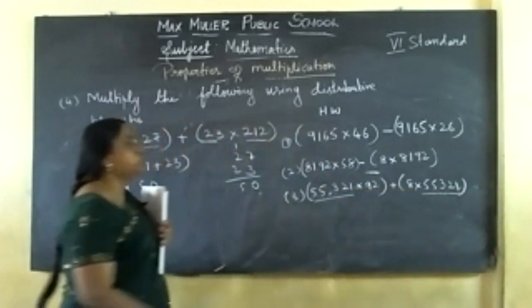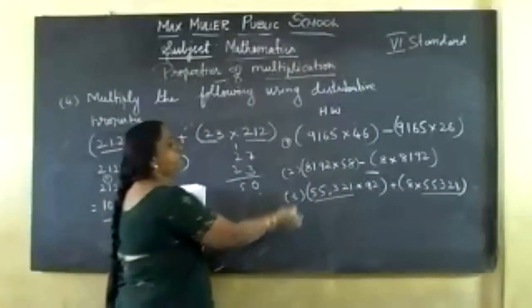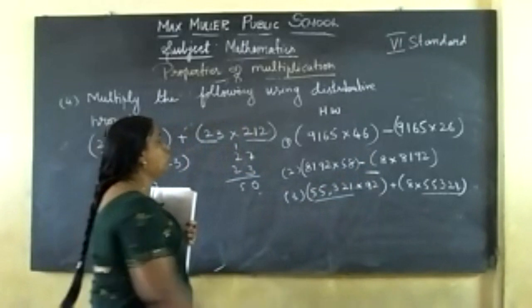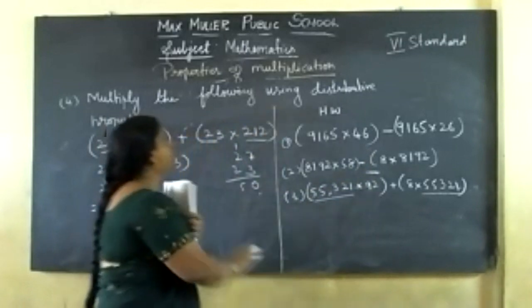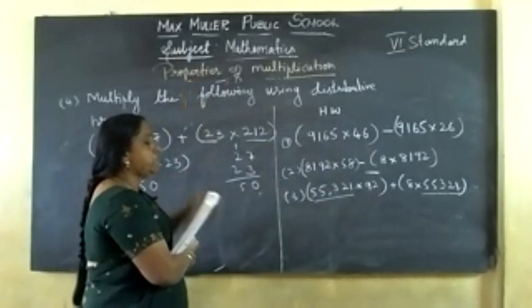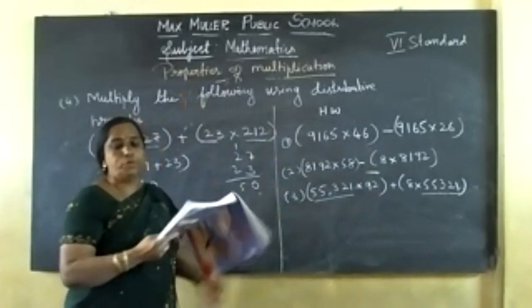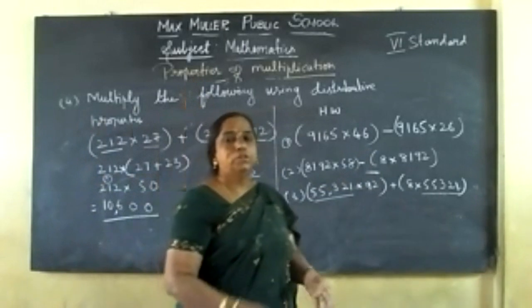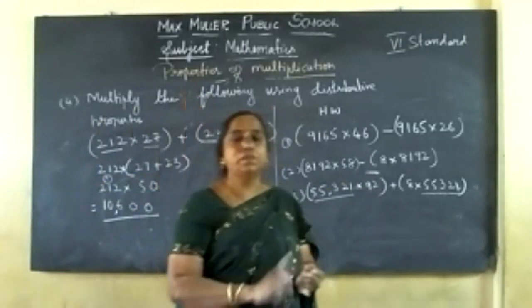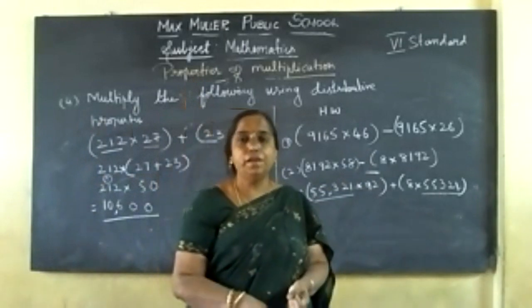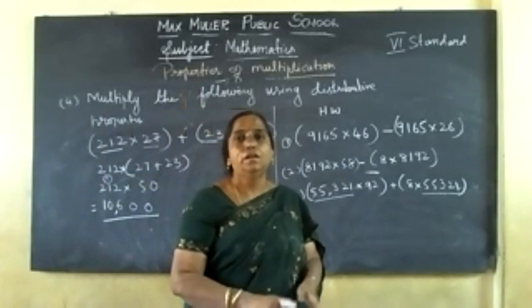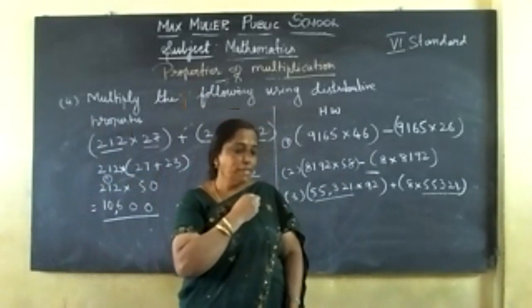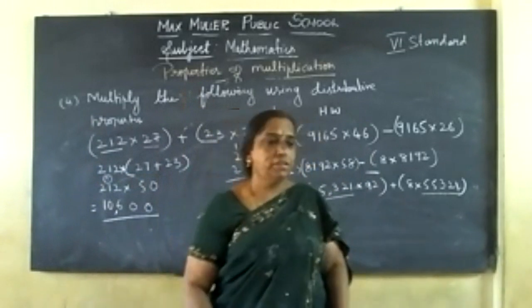92 plus 8 gives 100. So simple — without doing any calculation, you can give the answer. Multi-properties of multiplication exercise is over. Next class, I will go for distributive property, then I will start a new lesson. Addition over, subtraction over, multiplication over — only division is there. I will finish division then start a new lesson. Thank you, children. Have a nice day.